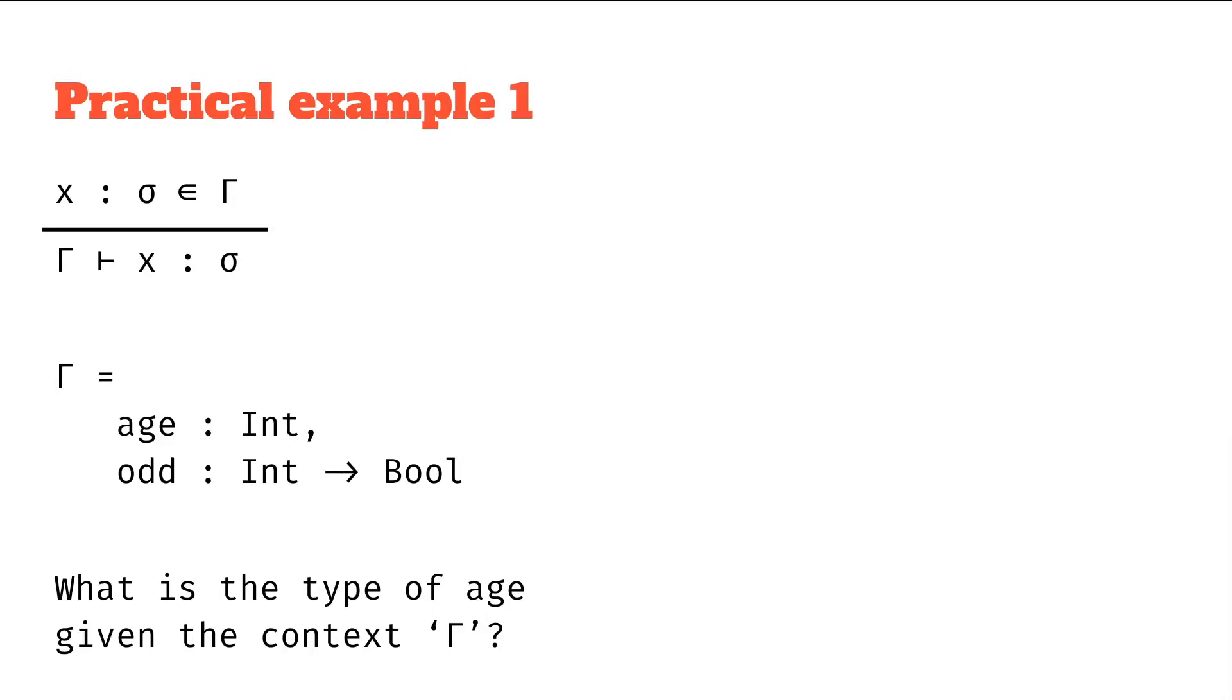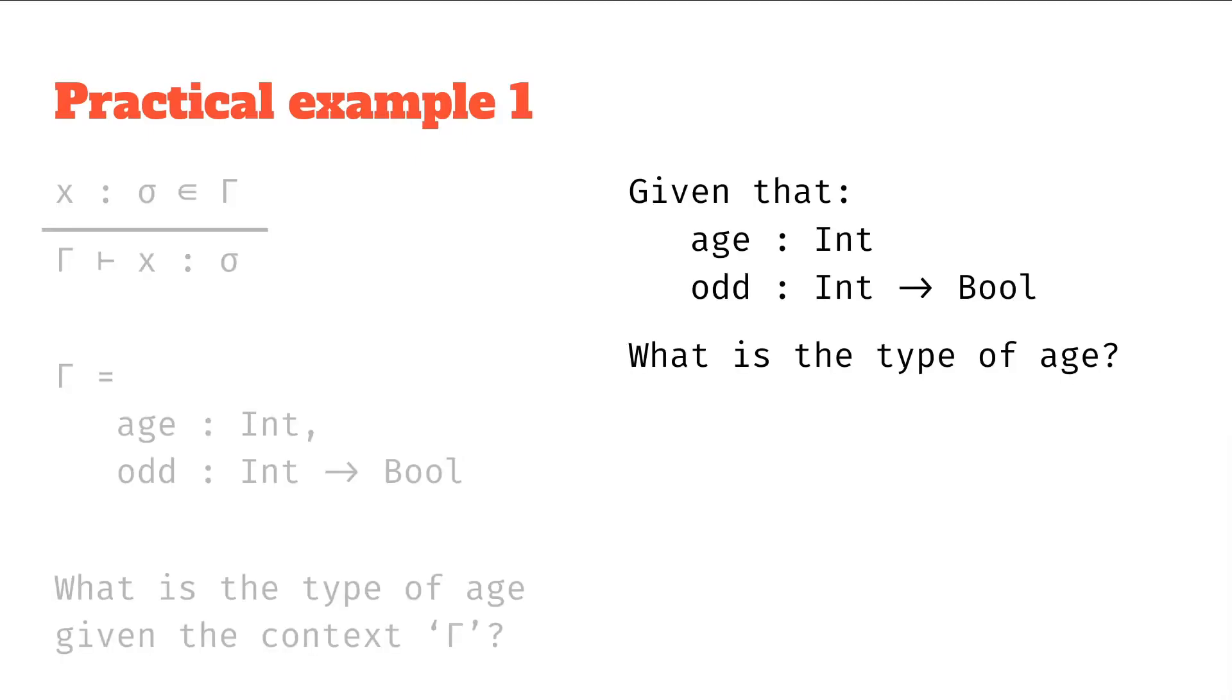And we want to ask the question, what is the type of the expression age, given the context gamma? Another way you might phrase this is, given that we have this context, age as type int and odd as type int to bool, what is the type of age?